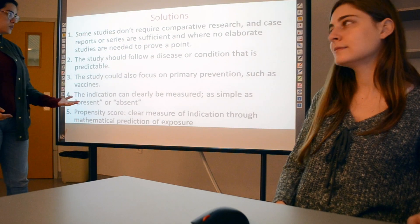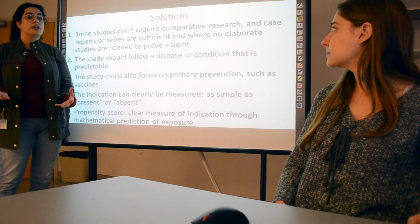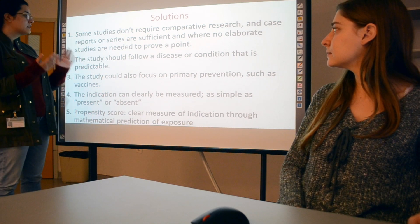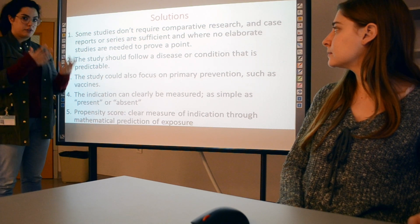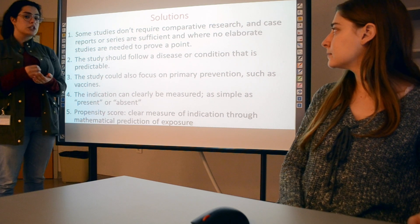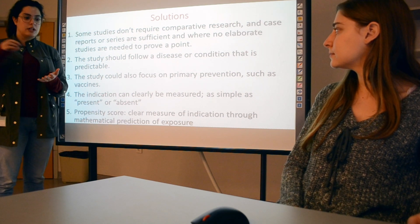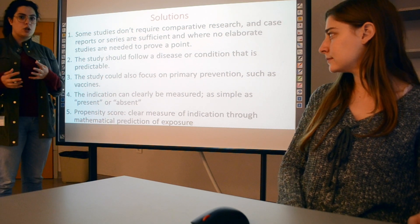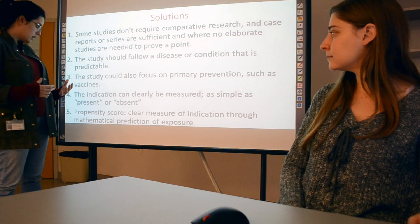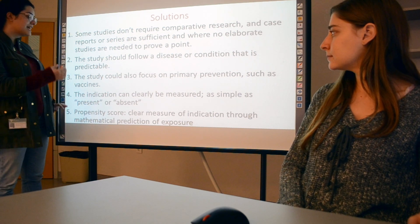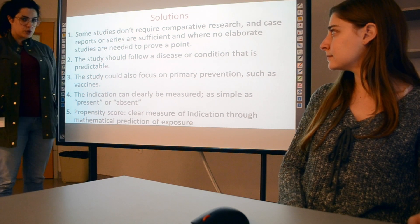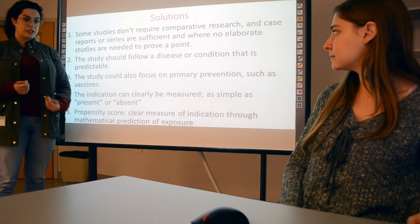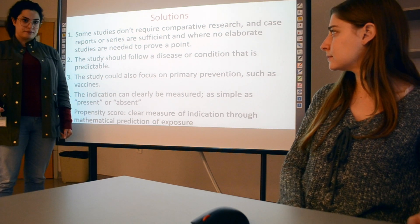What are the solutions to confounding by indication? First, some studies don't require comparative research — case studies or case series are sufficient. Second, the study should follow a disease or condition that is predictable with no unpredictable pathways. Third, the study should focus on primary prevention, such as vaccines. Fourth, the indication can be clearly measured as simply present or absent. The fifth and newest solution is the propensity score — a clear measure of indication through mathematical prediction of exposures.